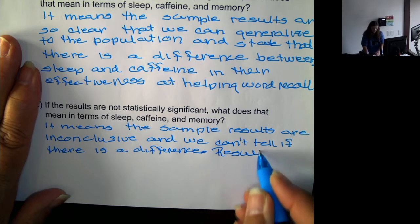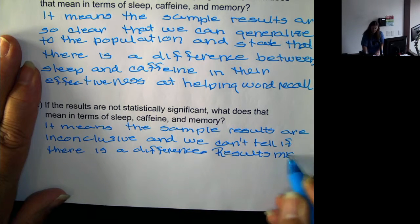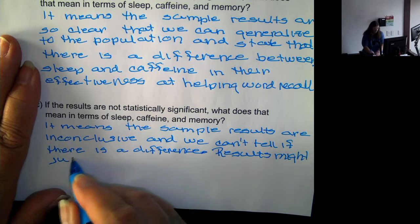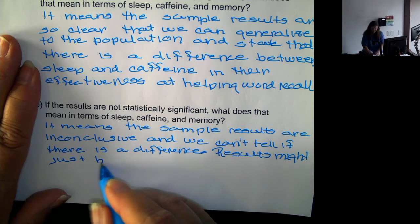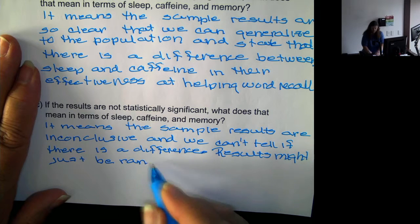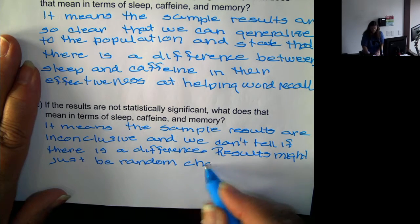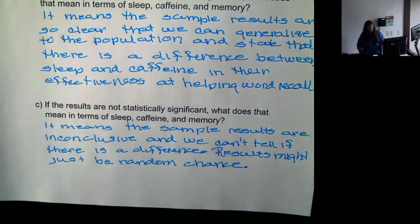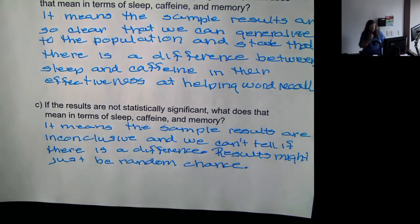Results might just be random chance. So if there is no statistically significant results then we really can't tell what it is. Did it really make a difference? Are they really different? Or the difference in this sample may just be random chance, it may just be a fluke. We're not really sure.